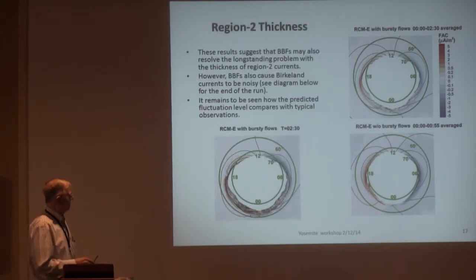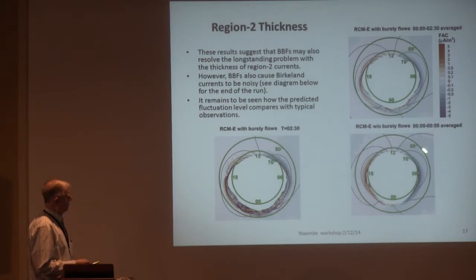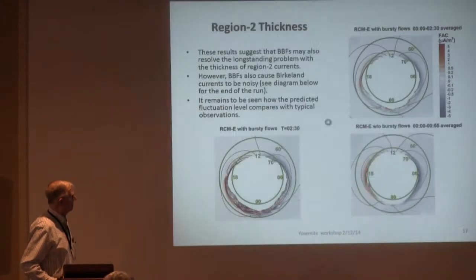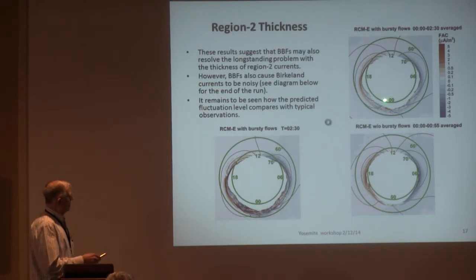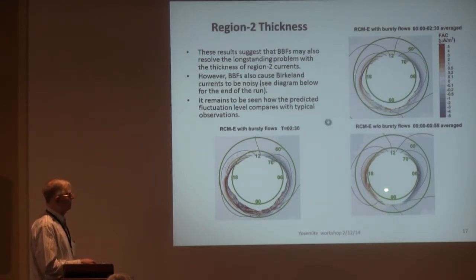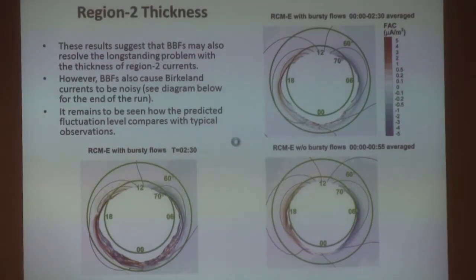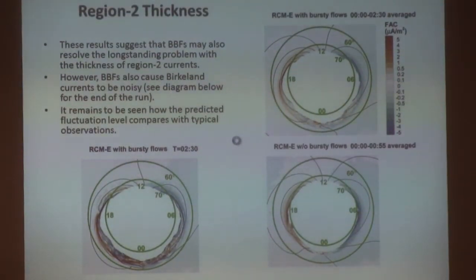We also found these Birkeland current patterns — the color is Birkeland current. The control run with no bursty bulk flows is compared to the run with BBFs. The Birkeland currents are now spread out more in latitude than in the control run, so the bursty bulk flows have achieved that on the average. However, they also make a very noisy pattern. So a prediction of this explanation is that the noise level we get out of this theoretical calculation will hopefully agree with the observed noise level in Birkeland currents, and we're going to try to look at that in the data.